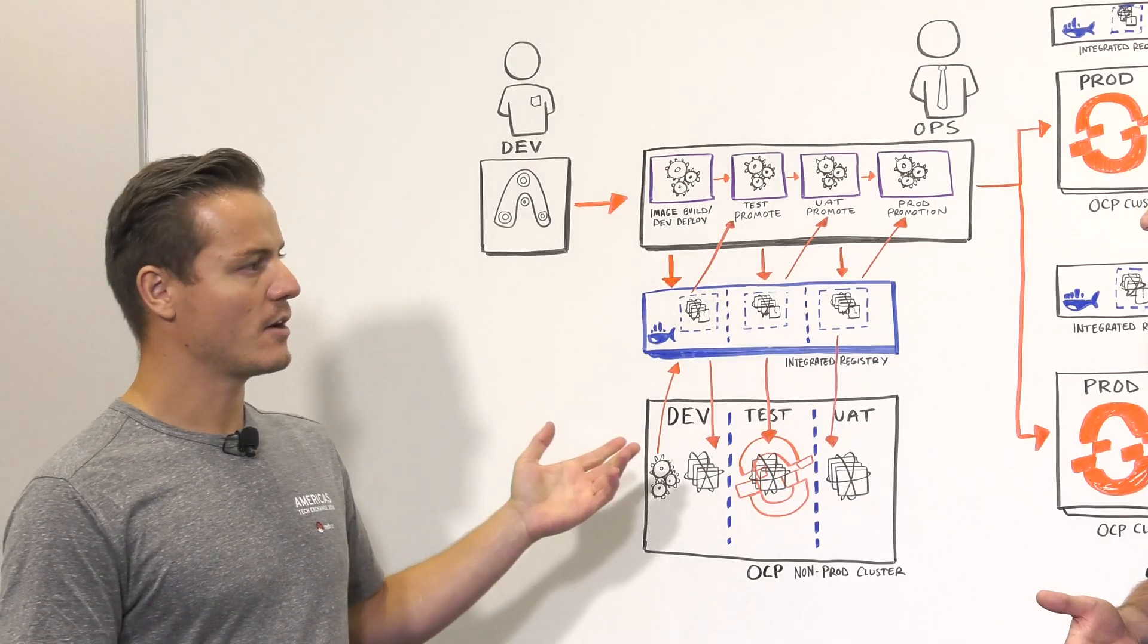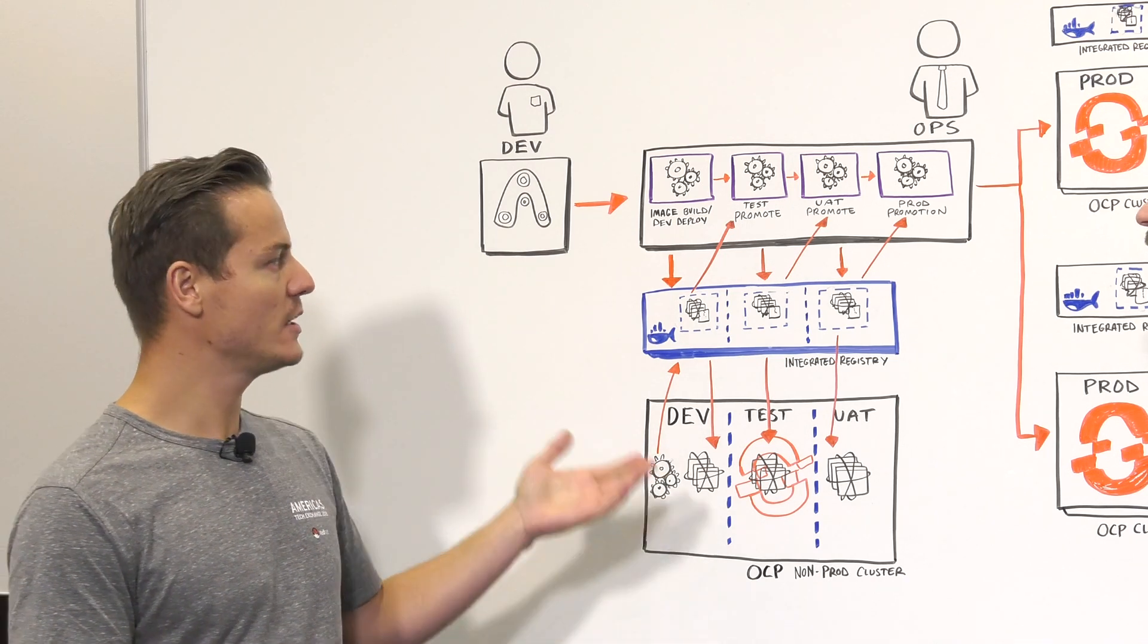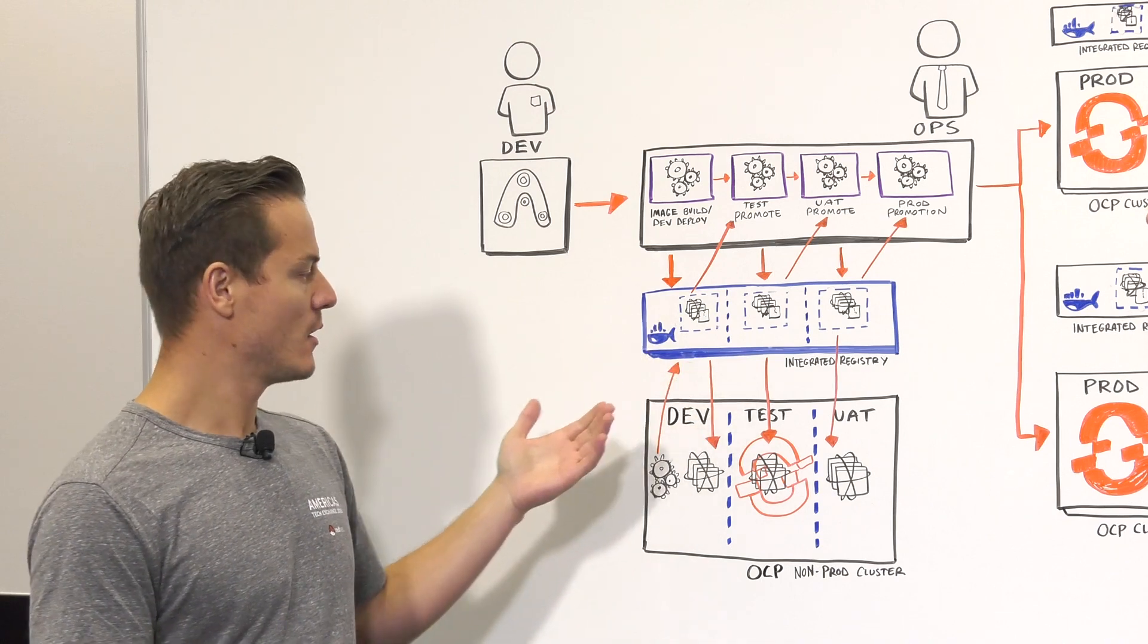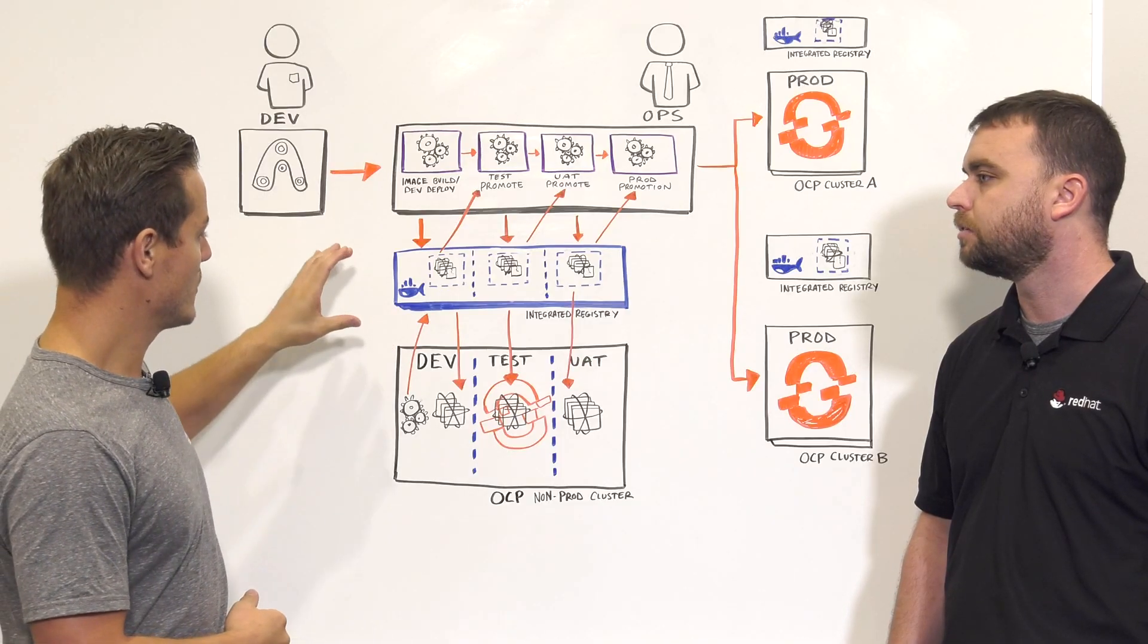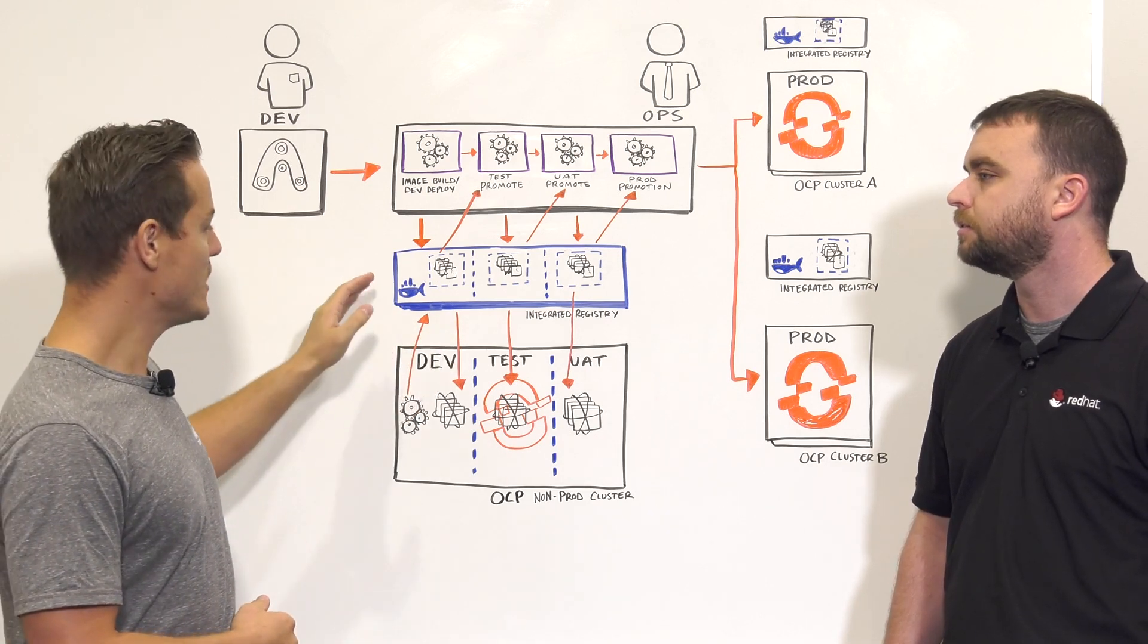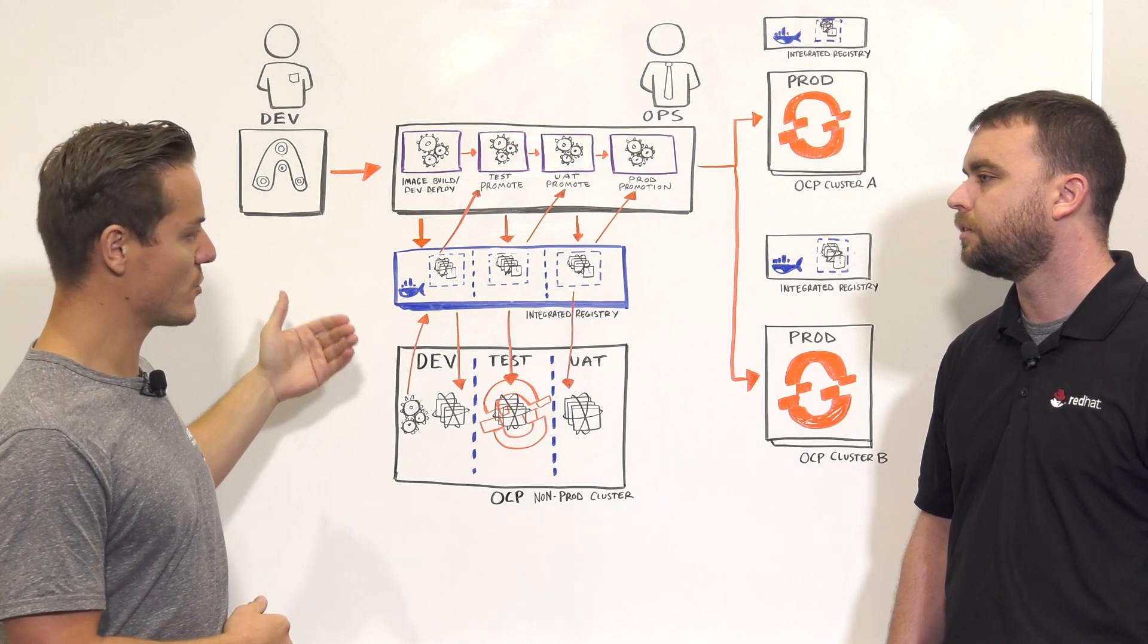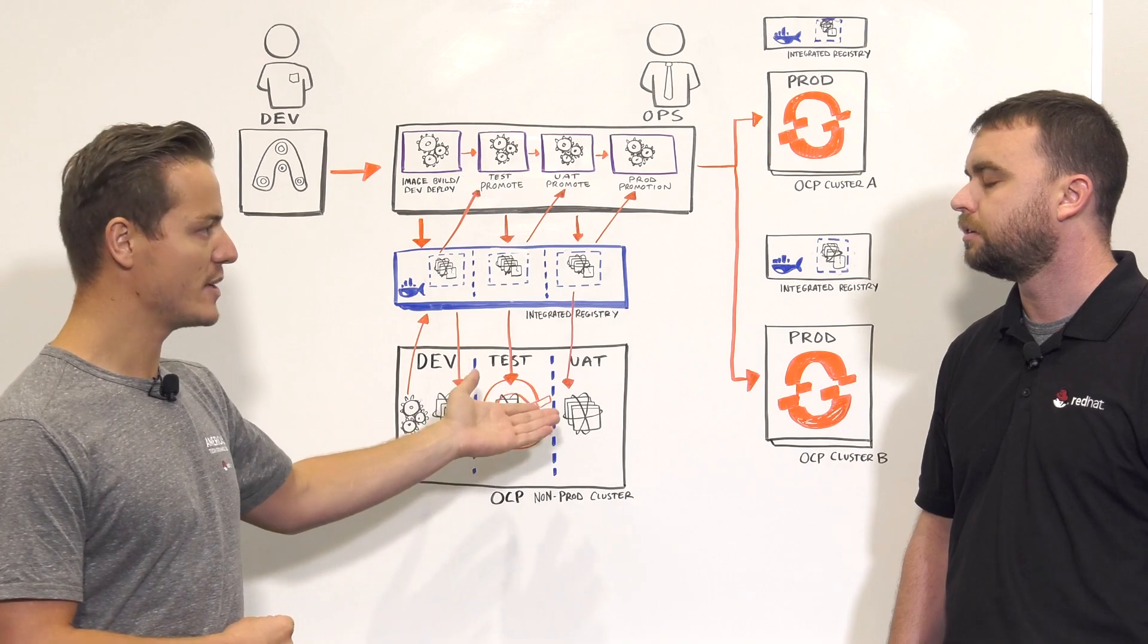So let's dig deeper on how that works. We have an integrated registry, as you mentioned, in each of our clusters. In our Dev, Test, and UAT environment, the integrated registry has image streams. And each image stream is where each of those images is stored for every one of those projects. So we have our Dev, Test, and UAT projects.